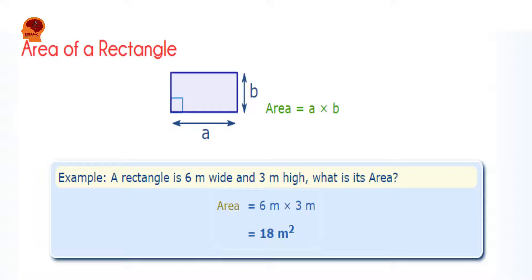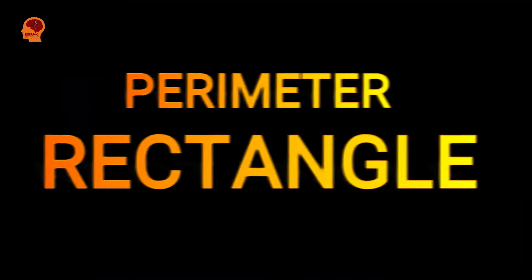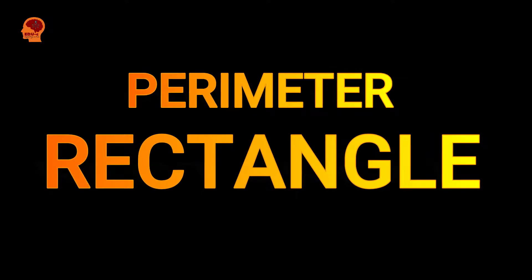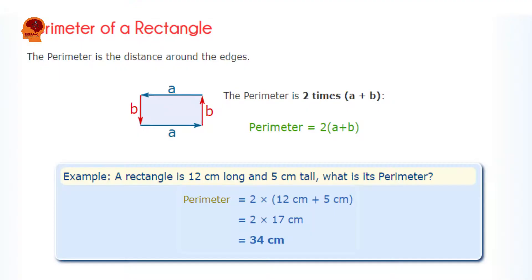Here is an example: a rectangle is 6 meters wide and 3 meters high. What is its area? From the formula, Area = length × breadth, so Area = 6 meters × 3 meters. The perimeter is the distance around any plane shape.